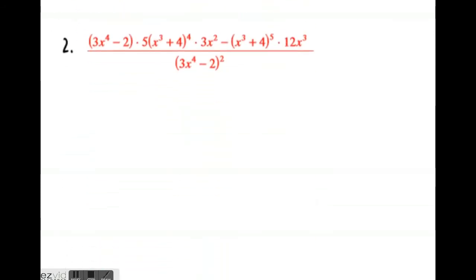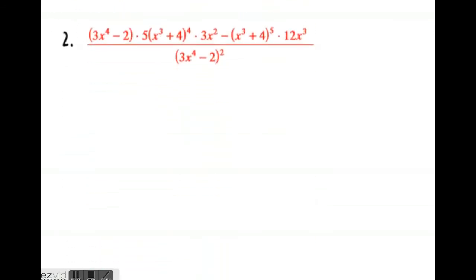Now let's see another example, a little bit more complicated but the same idea. We want to simplify first. As I'm simplifying, notice that both numerator terms have a common factor of 3 and x, and each has a common bracket x power 3 plus 4 with different exponents.